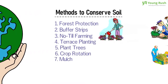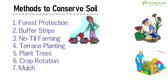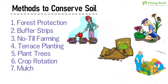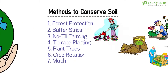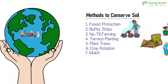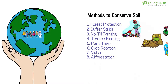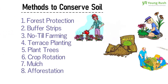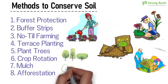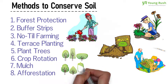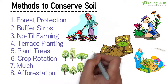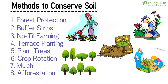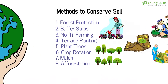7. Mulch. Mulch works to prevent erosion from the wind and helps the soil to retain the water it needs. 8. Afforestation. Planting trees is a method of conserving the soil. Protecting the areas under trees is also called afforestation. This works to encourage healthy soil and water absorption.